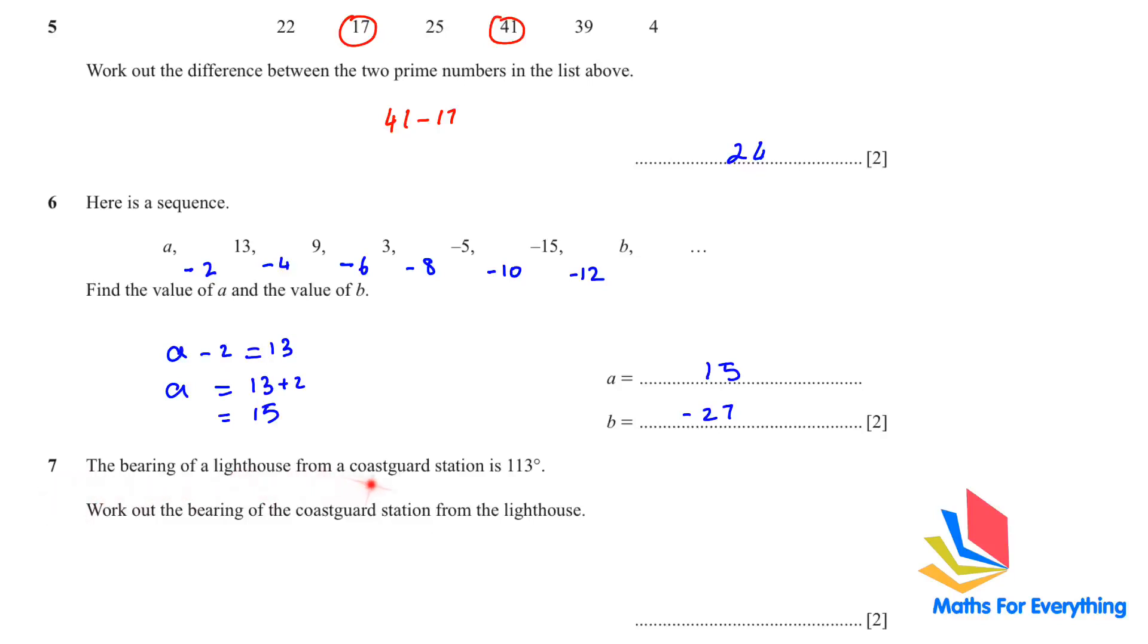Question 7. The bearing of a lighthouse from a coast guard station is 113. Work out the bearing of the coast guard station from the lighthouse. No diagram or anything has been given to you. Only an angle has been given to you. It's a very easy question. If the angle is less than 180, 113 is less than 180, right? So you add 180 to it. And you will get 293. So that's your answer. And if your bearing which they have given to you is more than 180, you subtract 180 from it. So just remember this trick. Less than 180, you add 180. More than 180, you subtract 180 from the angle.